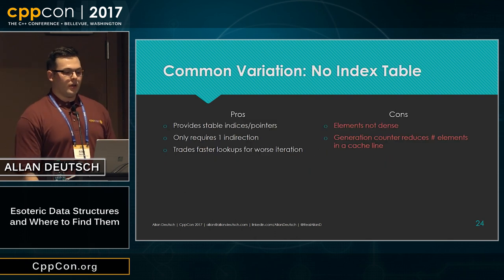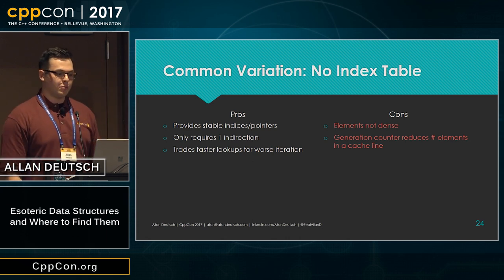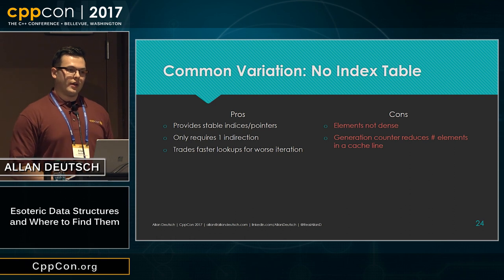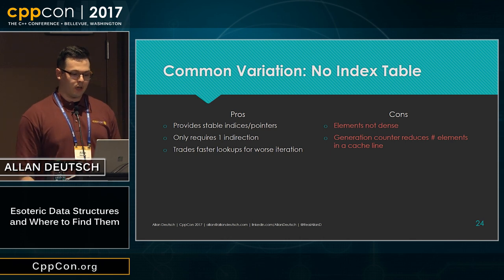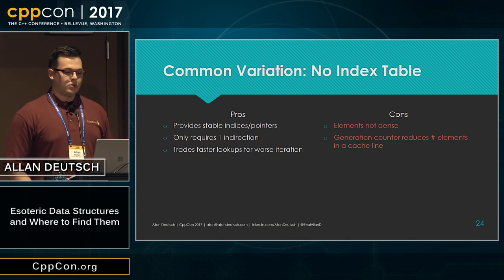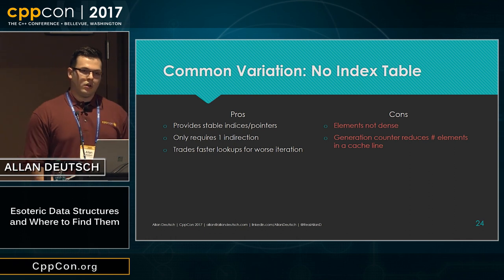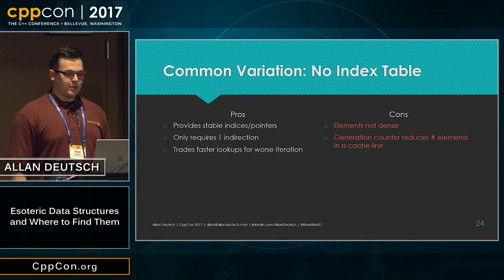One common variation is not using the index table — you're able to save a bit of memory and have stable indices and pointers. The way it works is you store the slot data right next to the data itself, so you don't have the indirection in memory either. This trades faster lookup times for worse iteration performance, since the elements aren't densely stored.